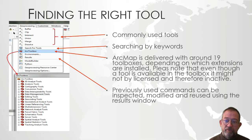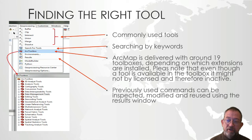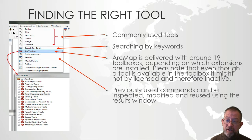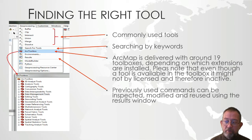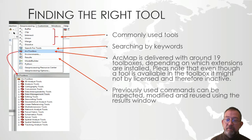There is the Search window where you can type any word from the tool's title or the help text and it will locate the tool. There is the Toolbox window itself. There is the Environment where you can set different environmental settings for more efficient processing, and finally we have the Results window where you can see previously run commands and go back and forth. We'll talk more about these in a moment.